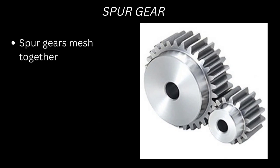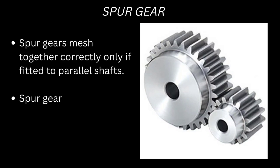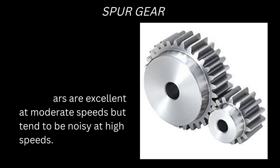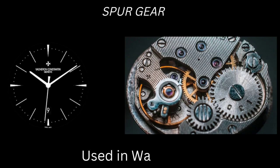Spur gears mesh together correctly only if fitted to parallel shafts. They are excellent at moderate speeds but tend to be noisy at high speeds. Spur gears are used in watches.